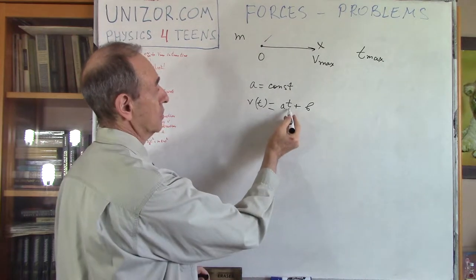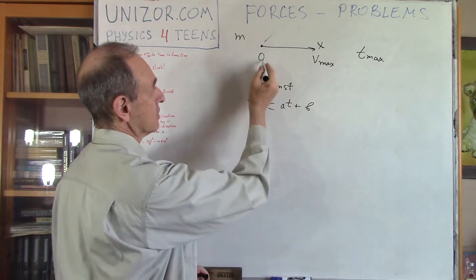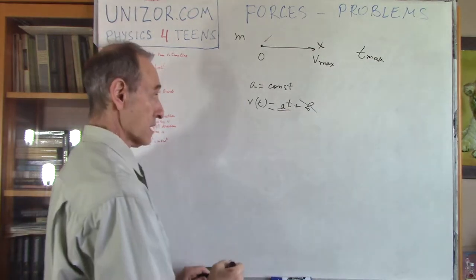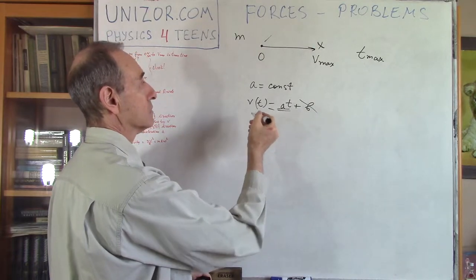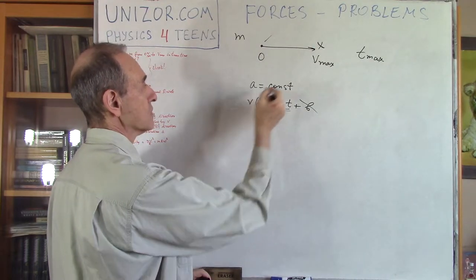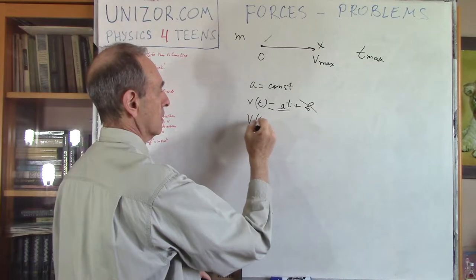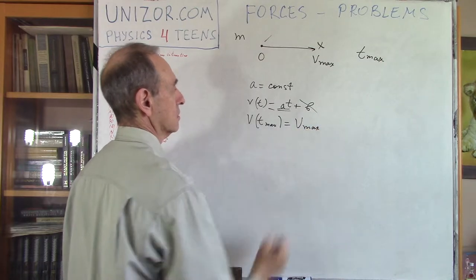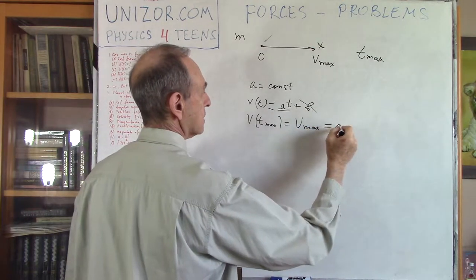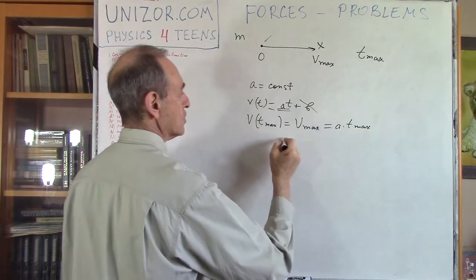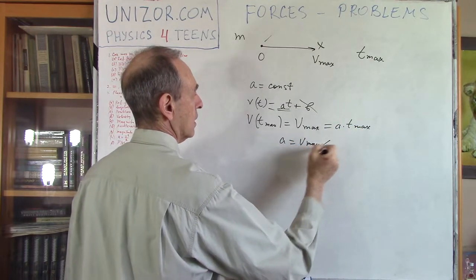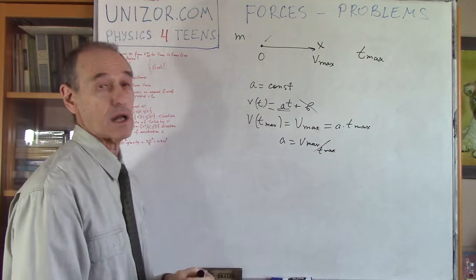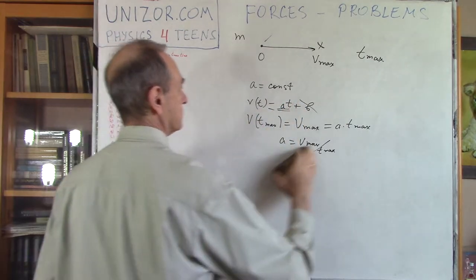Since at time zero my velocity is zero, the constant term should not be there. So the formula for velocity is v(t) = a·t, from which I can find acceleration because I know that at time t_max, velocity equals v_max. So v_max equals a·t_max, from which a equals v_max divided by t_max. That's my acceleration — it's constant.